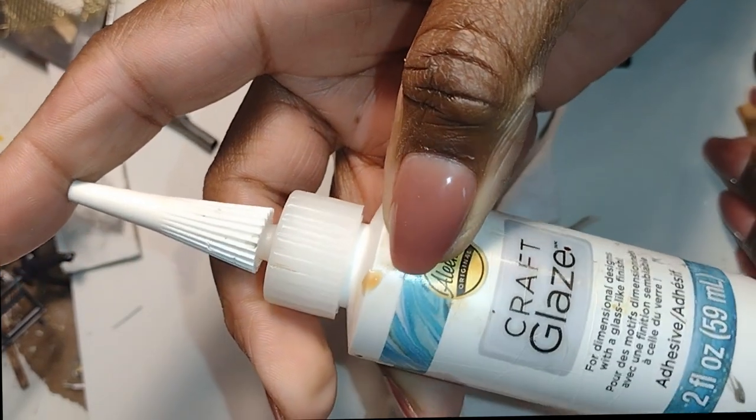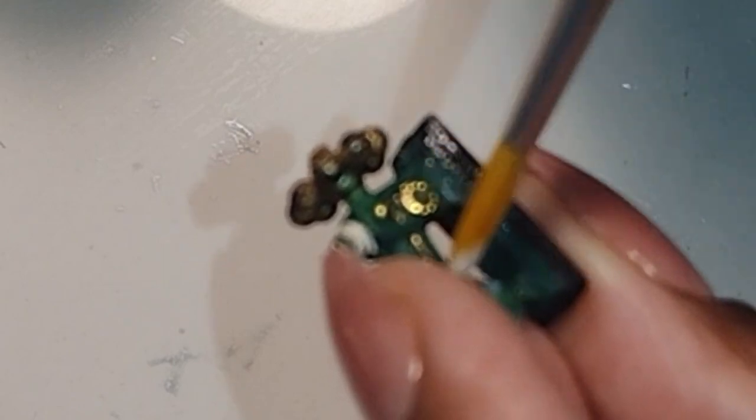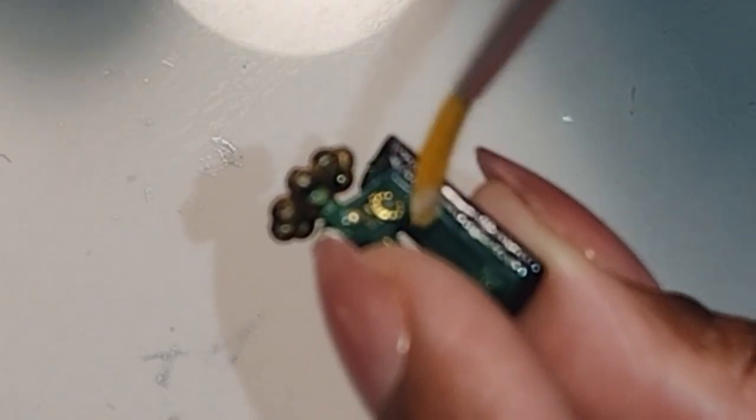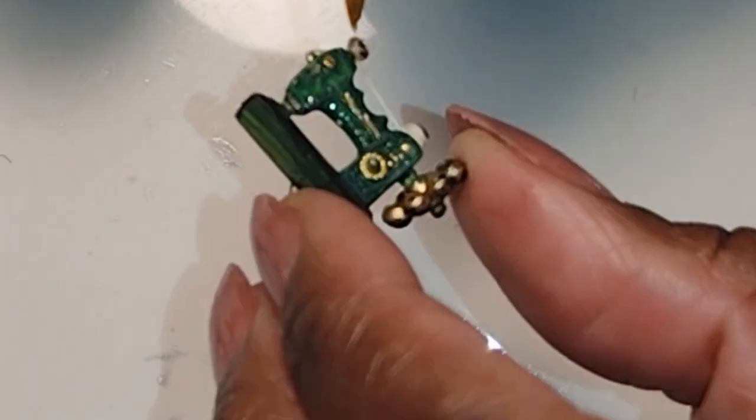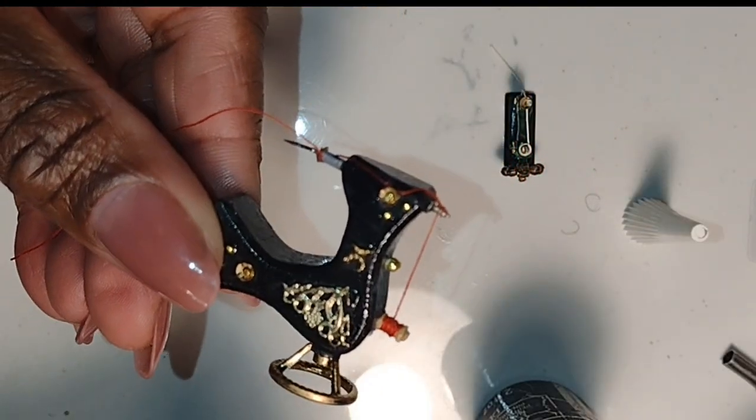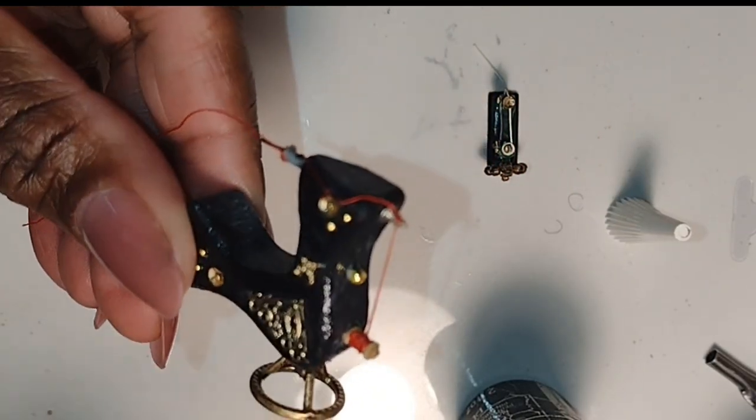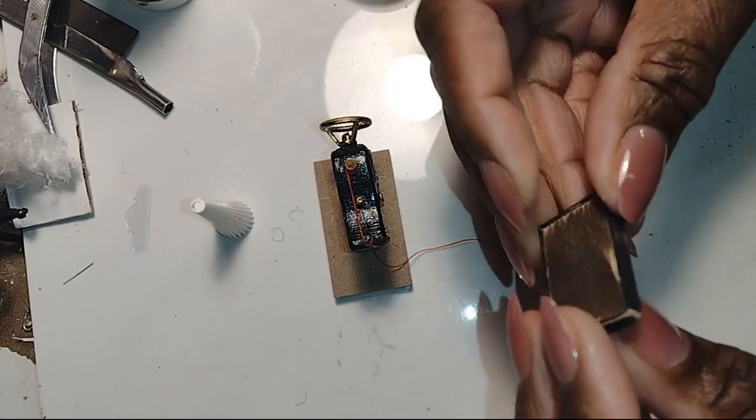When I say sealer in this instance I'm referring to my Aileen's craft glaze. I normally use this when I'm making my dollhouse food from polymer clay because it adds a nice light shine that just takes away the matte effect. It just gives things a light sheen instead of a real high gloss. And since I had it out already I went ahead and added a light coat of the craft glaze to the black machine as well.